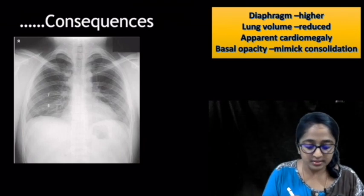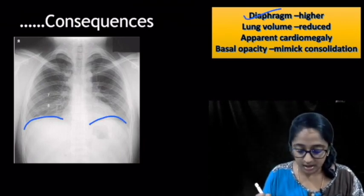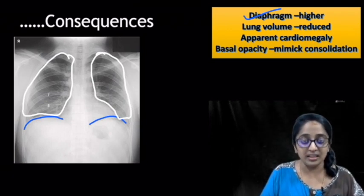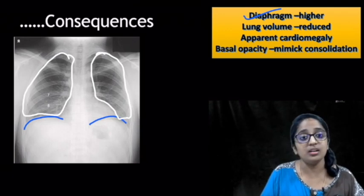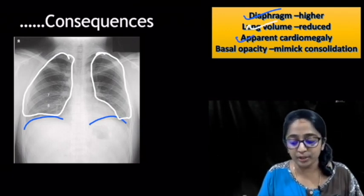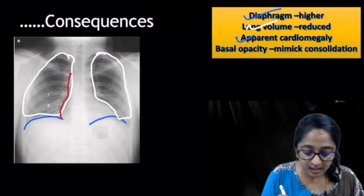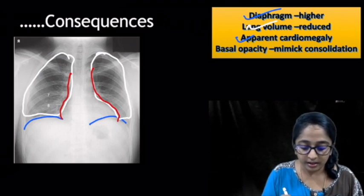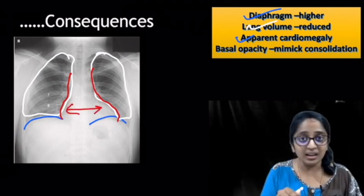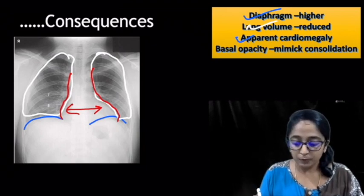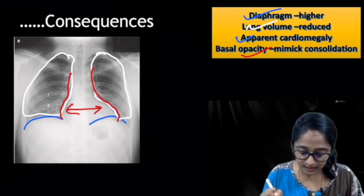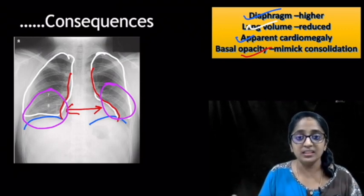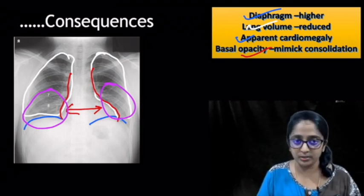On an expiratory film, the diaphragm is at a higher level, so the lung fields appear reduced in volume — you may incorrectly attribute this to interstitial lung disease. Third, because the diaphragm is pushed up, there is apparent cardiomegaly due to flattening of the cardiac contour — so do not diagnose cardiomegaly on an expiratory film. Finally, there is increased haziness in the basal lung fields due to overcrowding of vessels. These are the four drawbacks of an expiratory radiograph.